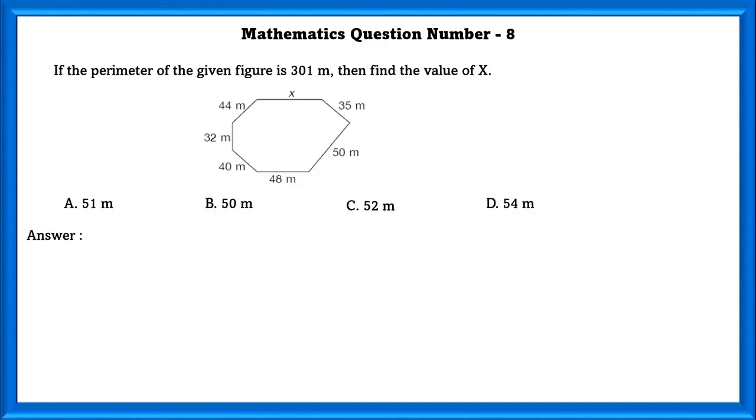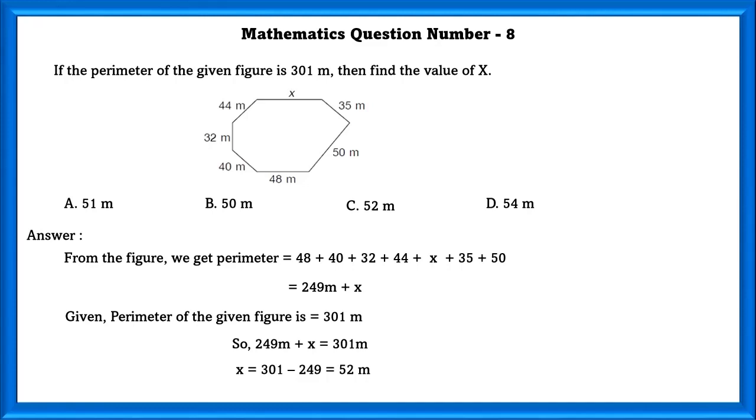Mathematics question number 8. If the perimeter of the given figure is 301 meter, then find the value of x. First, we can add the sides of the given figure using the meters they have already given. If we do that, we will get 209 meters plus x. Given, perimeter of the given figure is 301 meter. So in order to find x, we have to subtract the total meter, perimeter and 249 meter. If we do that, we will get 52 meters. So x is equal to 52 meters.